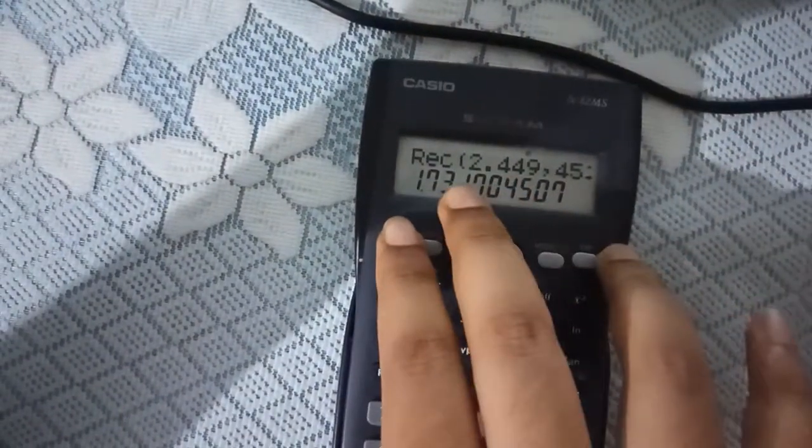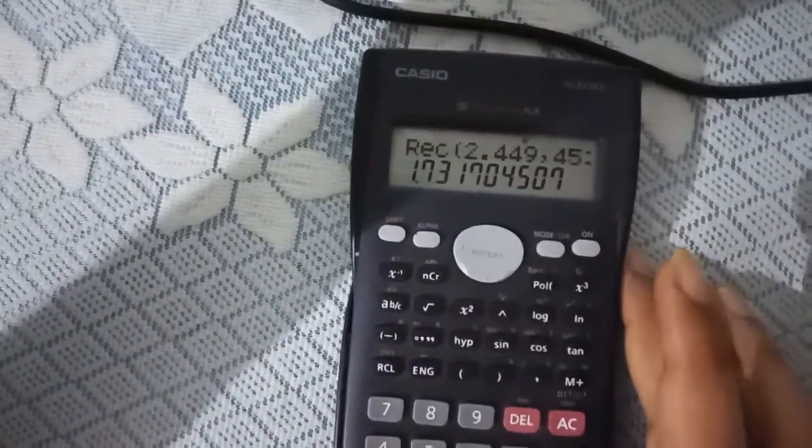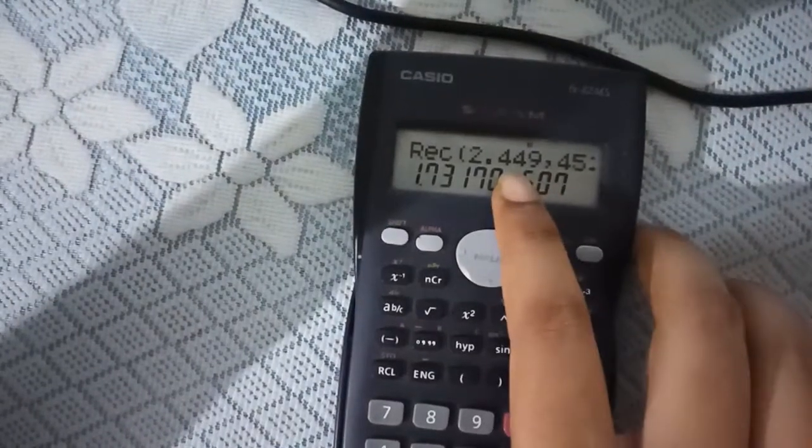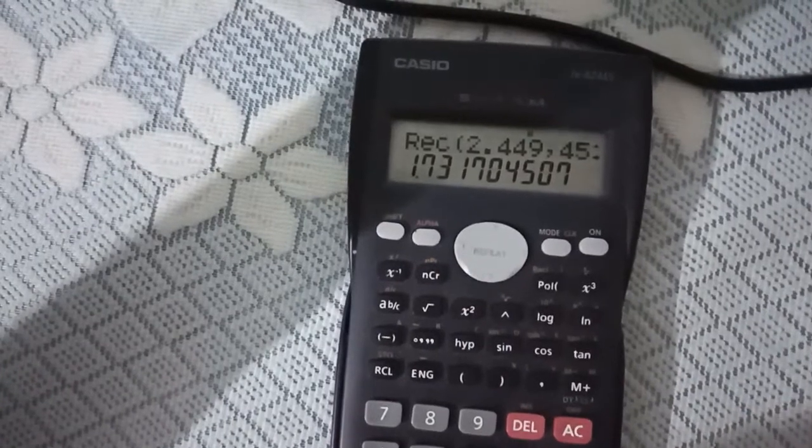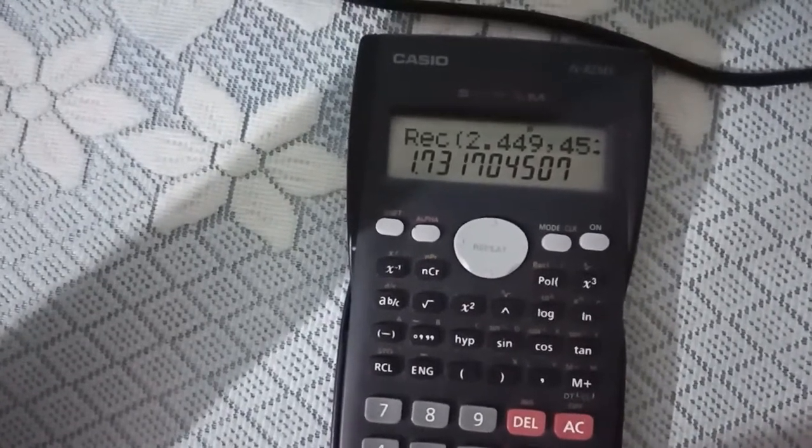That is 1.732. But since we have given up to only 4 significant figures, the value is coming as 1.731. That is the value of X. And how to find out the value of Y?